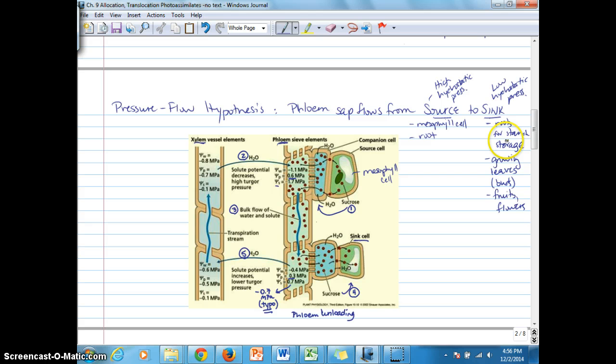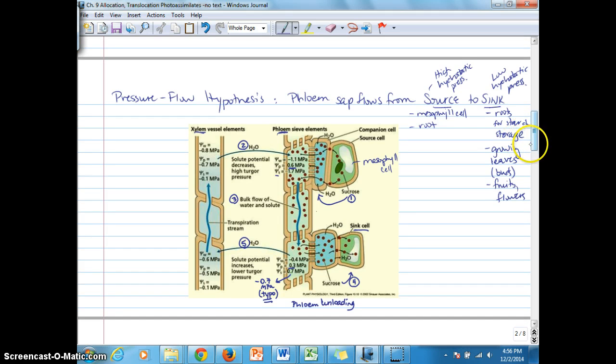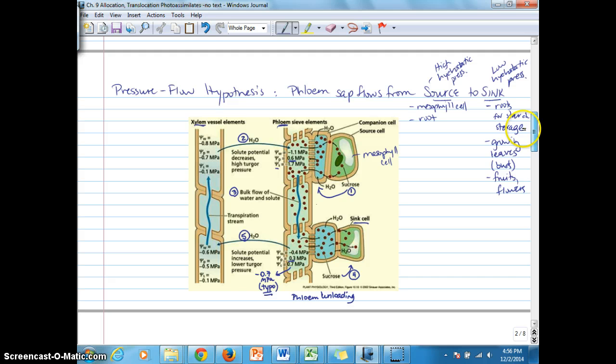A sink can also be for storage. After sucrose is synthesized, it can be stored as starch or stored in vacuoles as sucrose, for example in sugarcane or sugar beets. We're going to continue with what this diagram is showing us about the establishment of that hydrostatic pressure gradient in phloem and the water potential gradient in the nearby xylem.